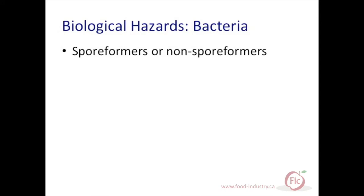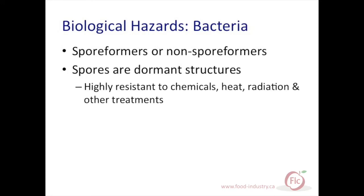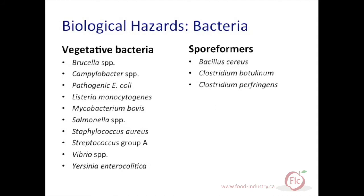Pathogenic bacteria can also be classified as spore formers and non-spore formers. Bacterial spores are dormant structures that are highly resistant to chemicals, heat, radiation, and other treatments that would normally be lethal to vegetative forms of both spore formers and non-spore formers. Certain types of bacteria such as Clostridium and Bacillus species enter this dormant stage to help the survival of the organism.